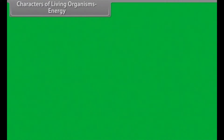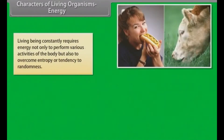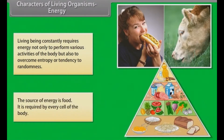Living beings constantly require energy, not only to perform various activities of the body, but also to overcome entropy, or the tendency of randomness. The source of energy is food, and it is required by every cell of the body.